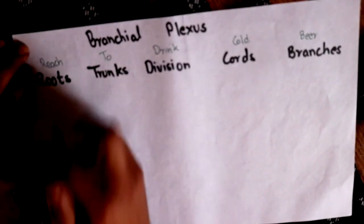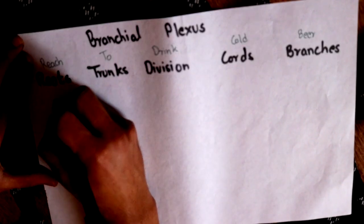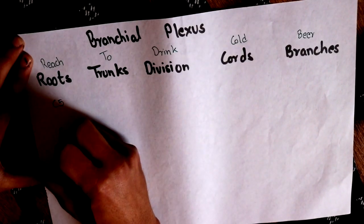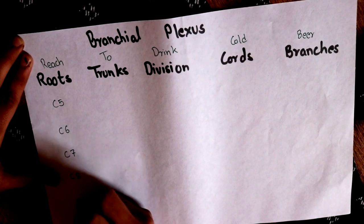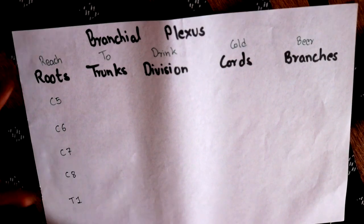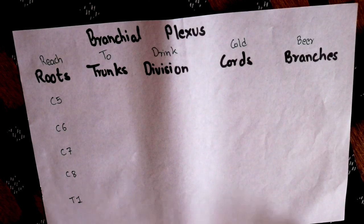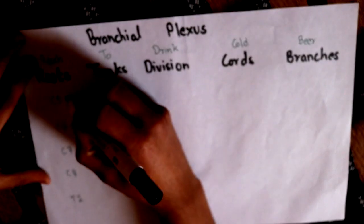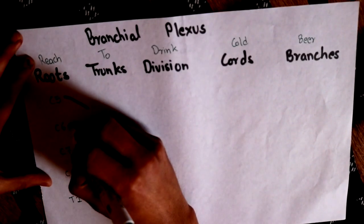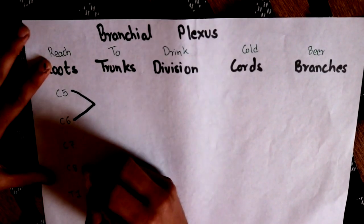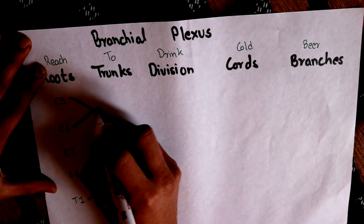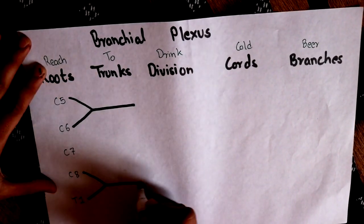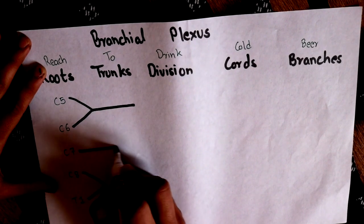Coming to the roots, we have five roots: C5, C6, C7, C8, and C1. We are going to bring two lines from C5 and C6 and meet them at a point, another two lines from C8 and C1 meeting at another point, a straight line from C7, forming the trunks.